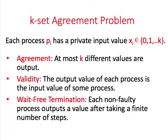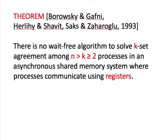K-set agreement is a generalization of consensus. Instead of all outputs having to be the same, up to k different values can be output. When k is equal to 1, this problem is the same as the consensus problem. K-set agreement is also impossible in an asynchronous system with more than k processes that communicate using registers. The first proofs of this result came many years later, and all used some form of argument from combinatorial topology.